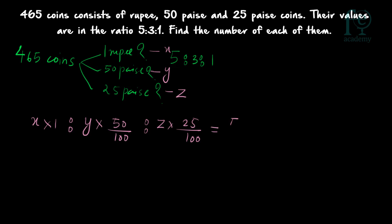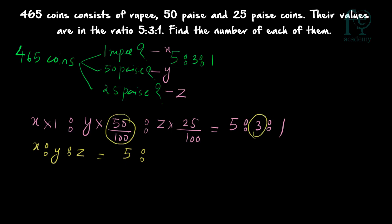The ratio of the values is given as 5:3:1. So we write the equation: x×1 : y×(50/100) : z×(25/100) = 5:3:1. To find x:y:z, cross multiply — taking 3×(100/50) and 1×(100/25) on the right-hand side.